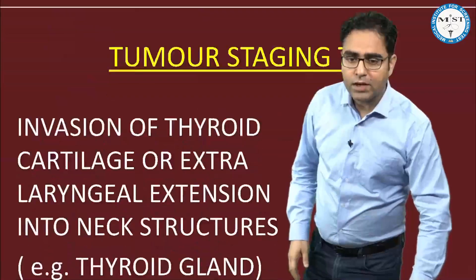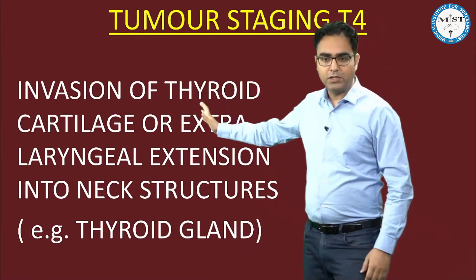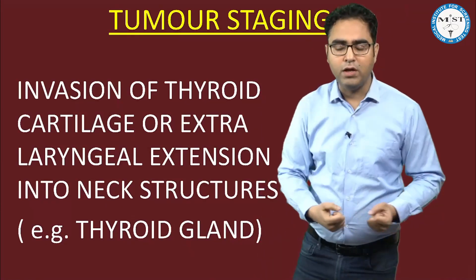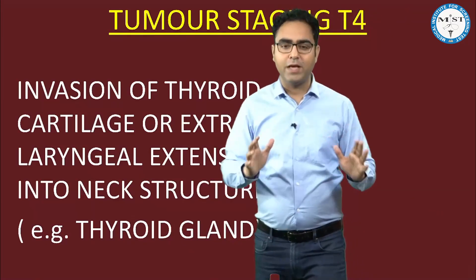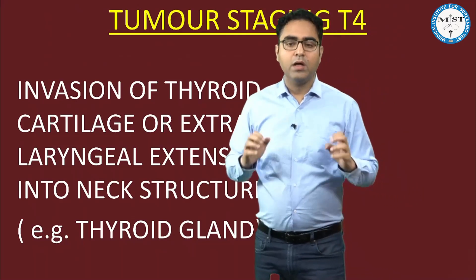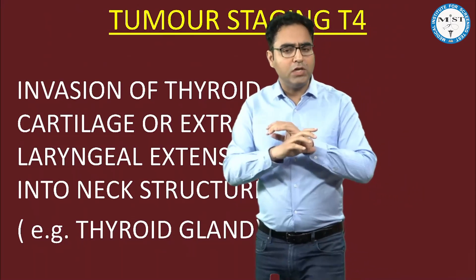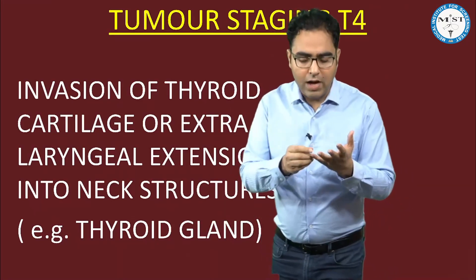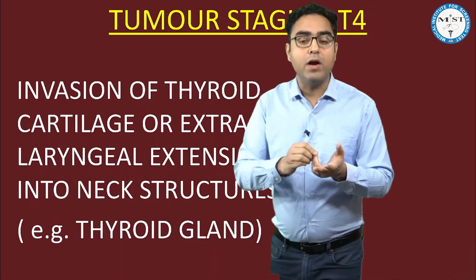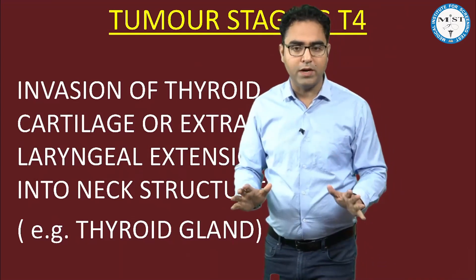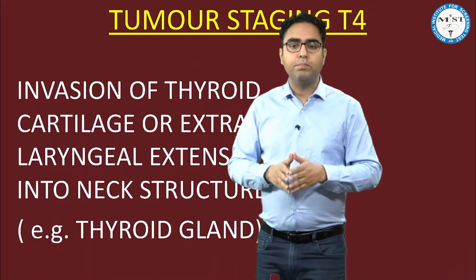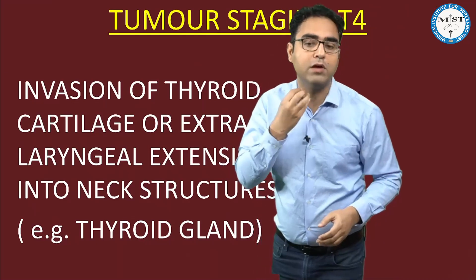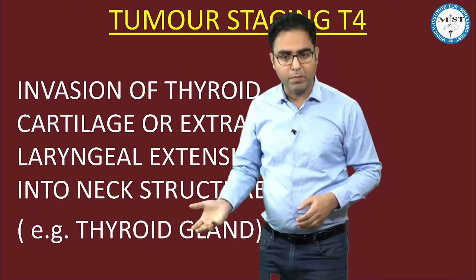Now T4 — T4 is invasion of thyroid cartilage. Some may say minor thyroid cartilage invasion is T3 and major is T4, but in the real world, the kind of questions that come — if they mention thyroid cartilage invasion, count it as significant only — it is T4. Thyroid cartilage invasion or perichondritis of thyroid cartilage = T4. Or if the tumor has passed through the thyroid cartilage and invaded some neck structure like the thyroid gland, that is also T4.